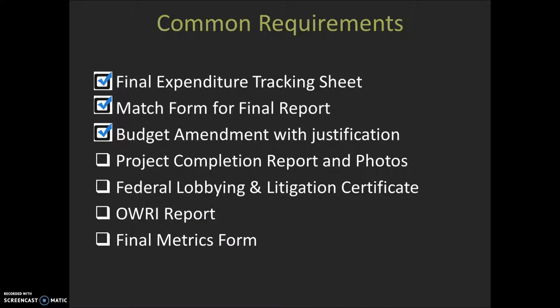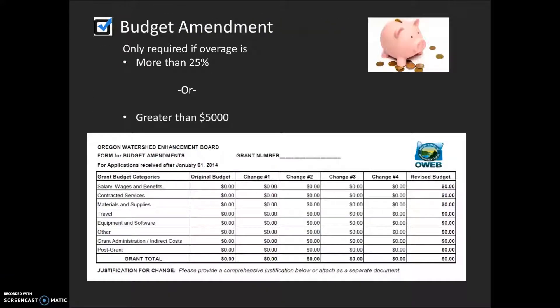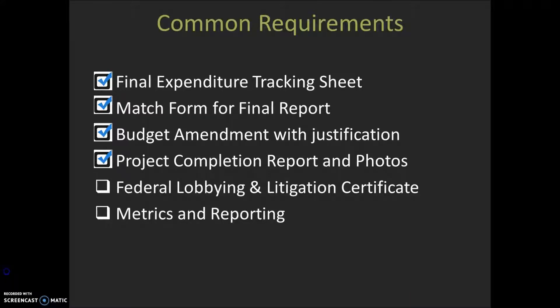Budget amendment. If you require a budget amendment to close out the financials on your grant, you must submit a budget amendment form along with the final request. As a reminder, budget amendments are required if the change is more than 25% of any affected category or greater than $5,000. For more information, please see our video entitled How to Prepare a Budget Amendment.